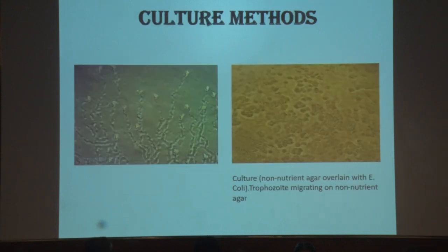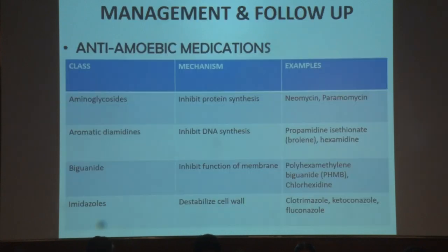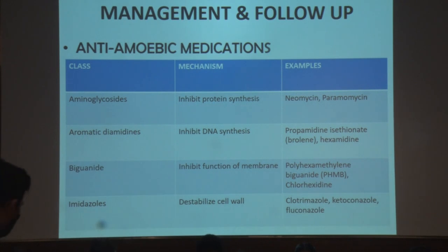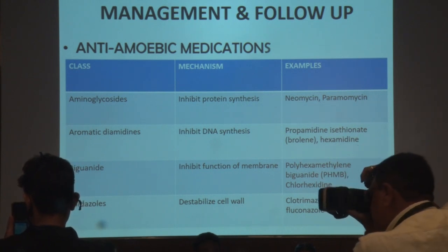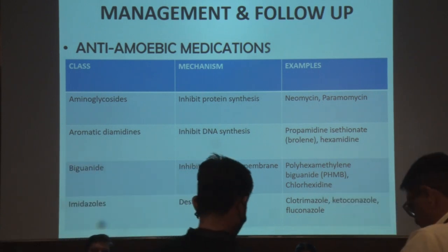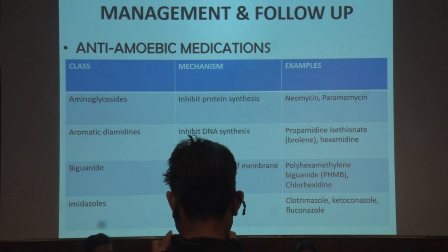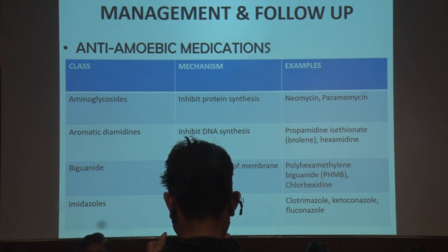Culture was done on non-nutrient agar overlaid with E. coli, which showed trophozoites migrating on the agar. Management included anti-acanthamoeba medications: aminoglycosides like neomycin and paromomycin (inhibiting protein synthesis), aromatic diamidines like propamidine isethionate and hexamidine (inhibiting DNA synthesis), biguanides — polyhexamethylene biguanide and chlorhexidine (inhibiting cell membrane function), and imidazoles like clotrimazole, ketoconazole, and fluconazole (destabilizing the cell wall).